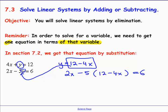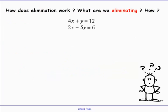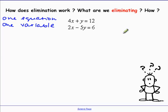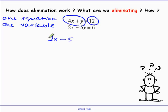In elimination, our goal is going to be the same — we want to get one equation with one variable, either x or y. So how can we eliminate a variable? The idea is that if two things are equal, we can add them to the left side and the right side of the equation.